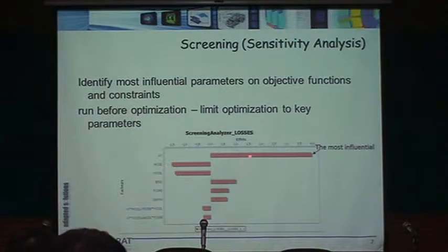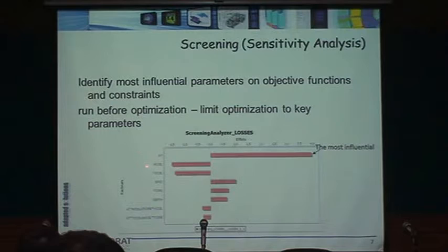From the screening: if I increase the current, the losses go up — that's positive. If I look at the height and width of the coil — if I increase the cross-sectional area of the coil, I lower the resistance and the losses go down. So those parameters act negatively on the objective function — if I increase the height of the coil, I'm lowering the losses.